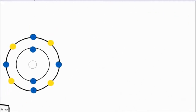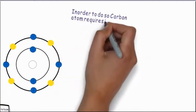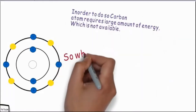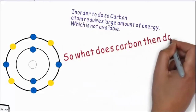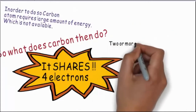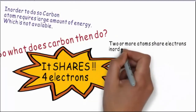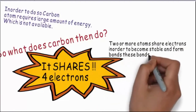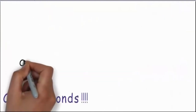but does none of them, as in order to do so it requires a large amount of energy which is not present. So what does carbon do? It shares 4 electrons. Two or more atoms share electrons in order to become stable and form bonds, and such bonds are known as covalent bonds.